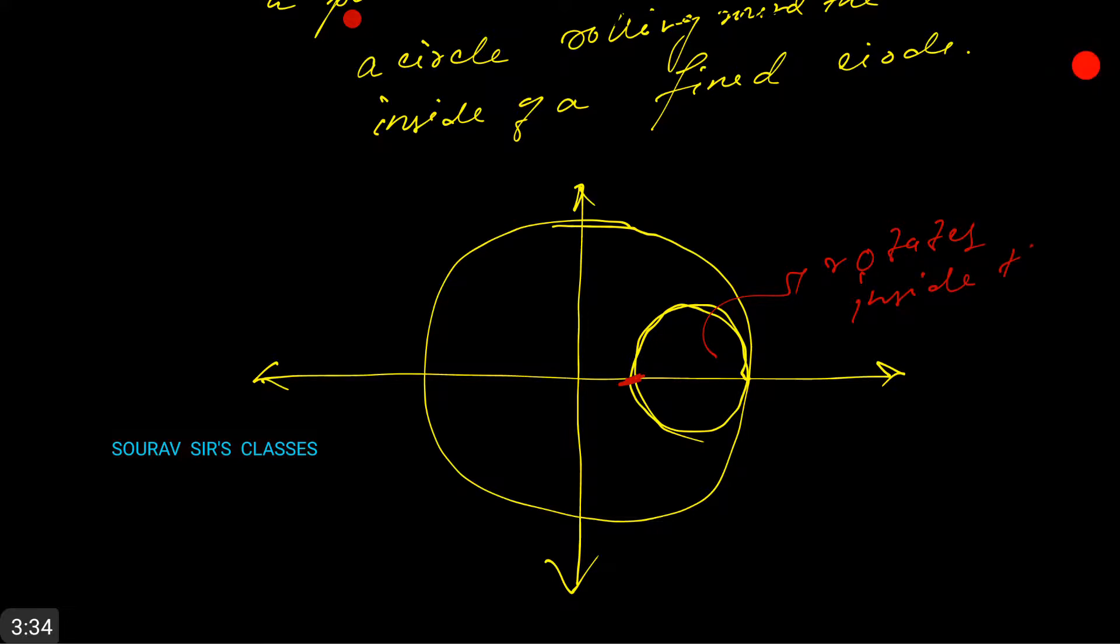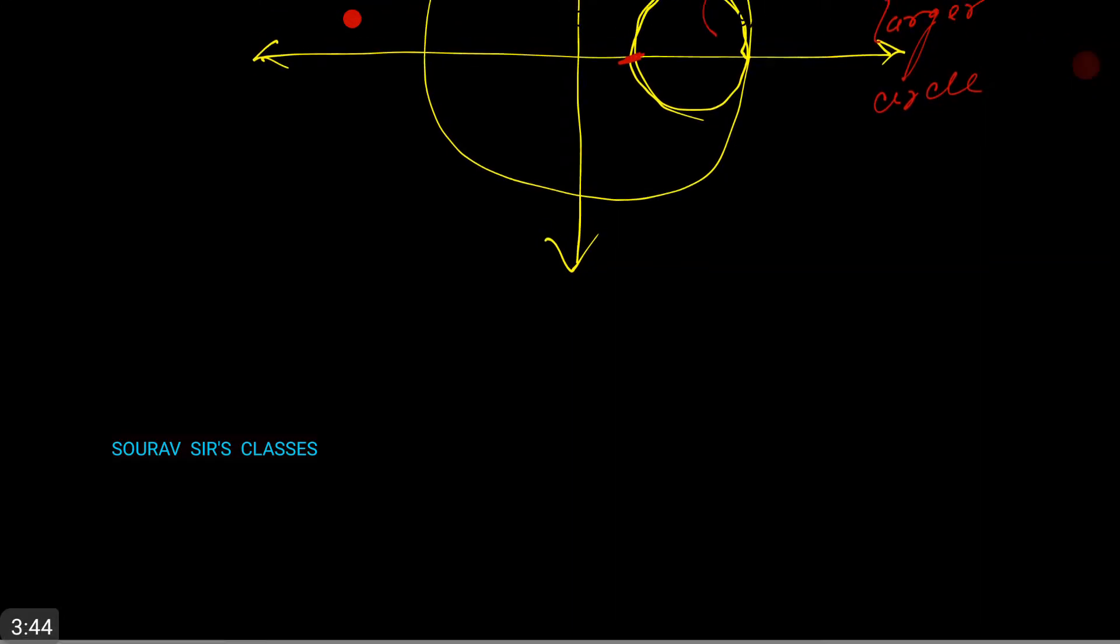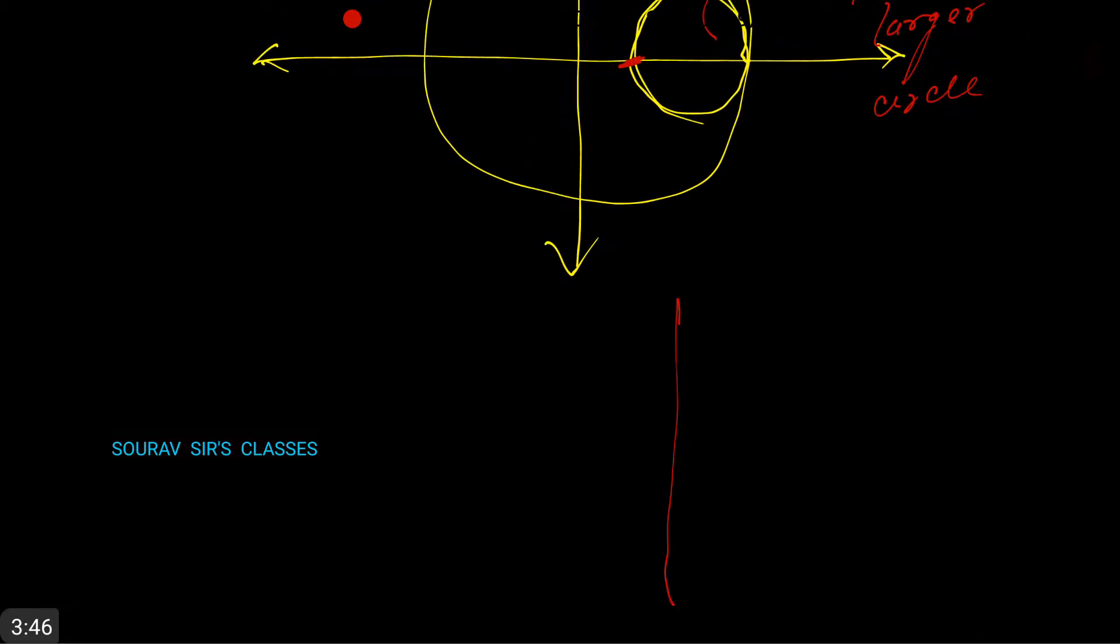Inside the larger circle, it will trace out a curve which is somewhat like so. This is the larger circle and this will be like...